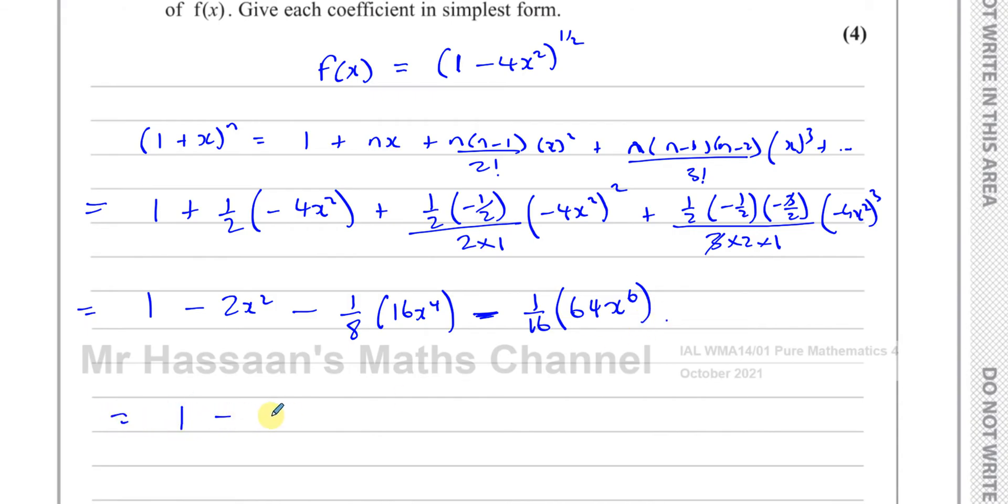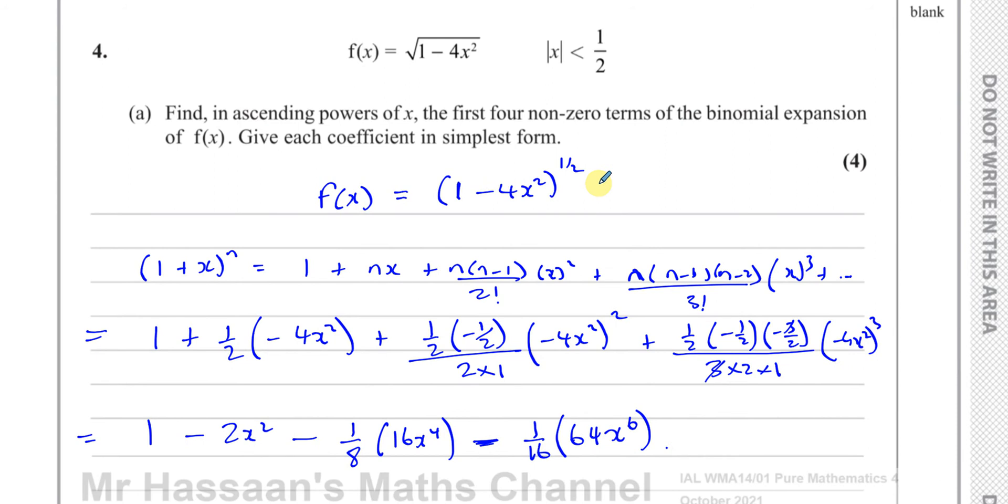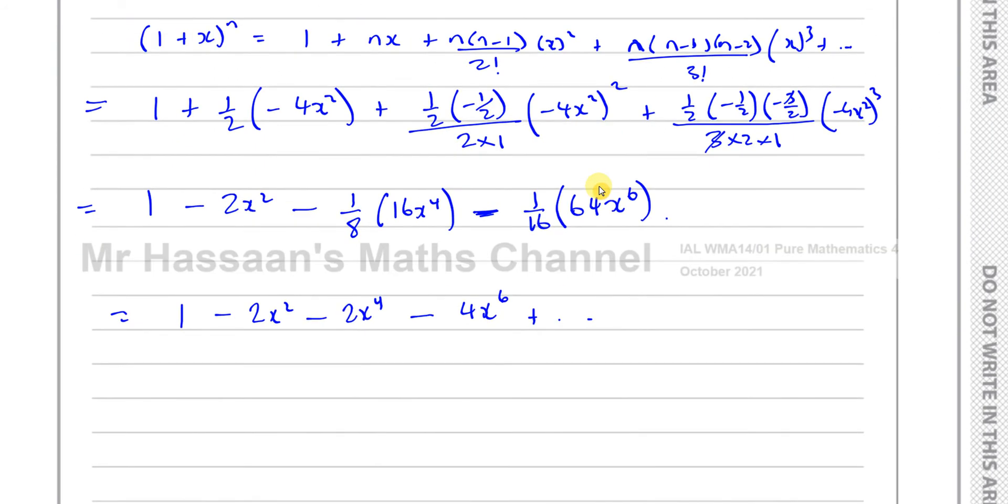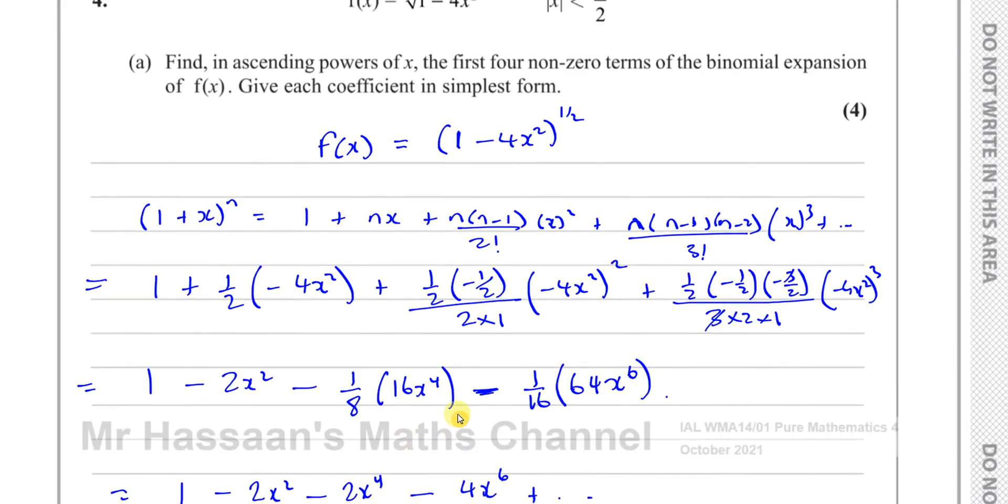So that gives you 1 minus 2x squared minus 2x to the power of 4, and minus 4x to the power of 6. And those are the first four terms, in the simplest form, for this binomial expansion. So there's the answer for part A.